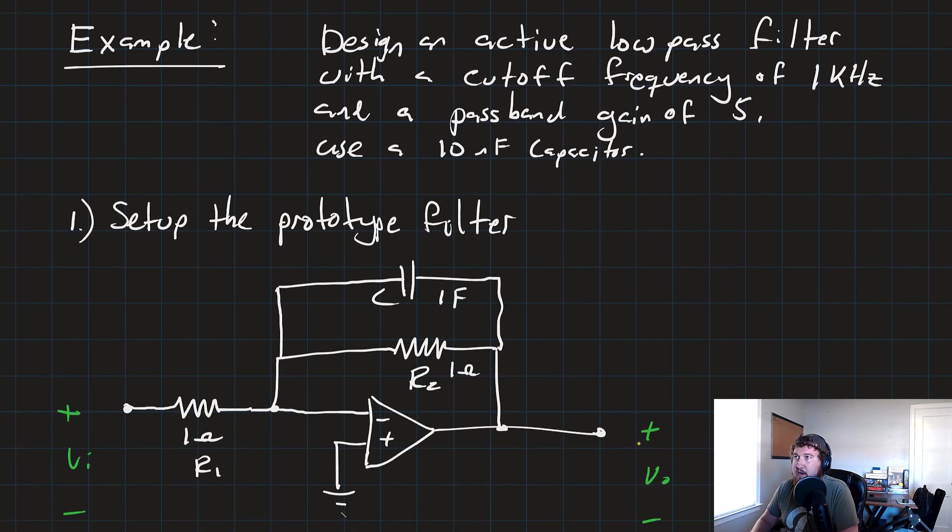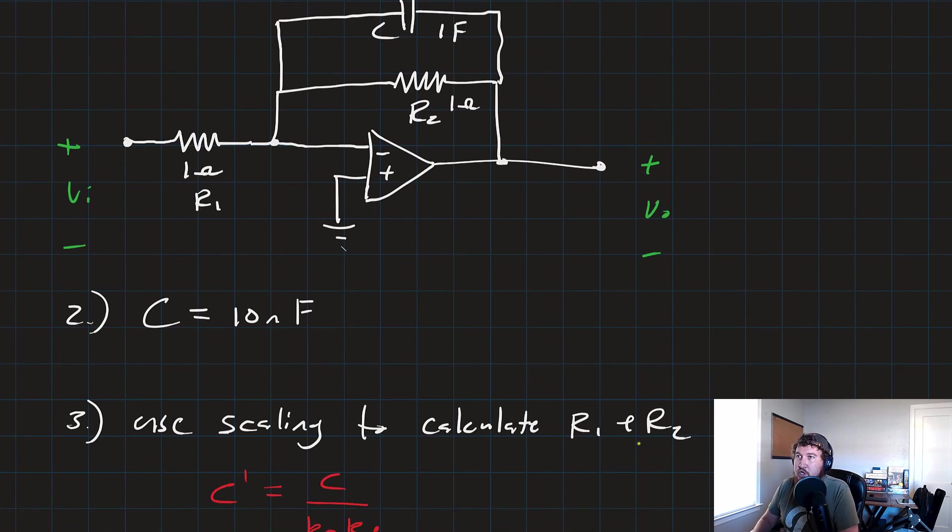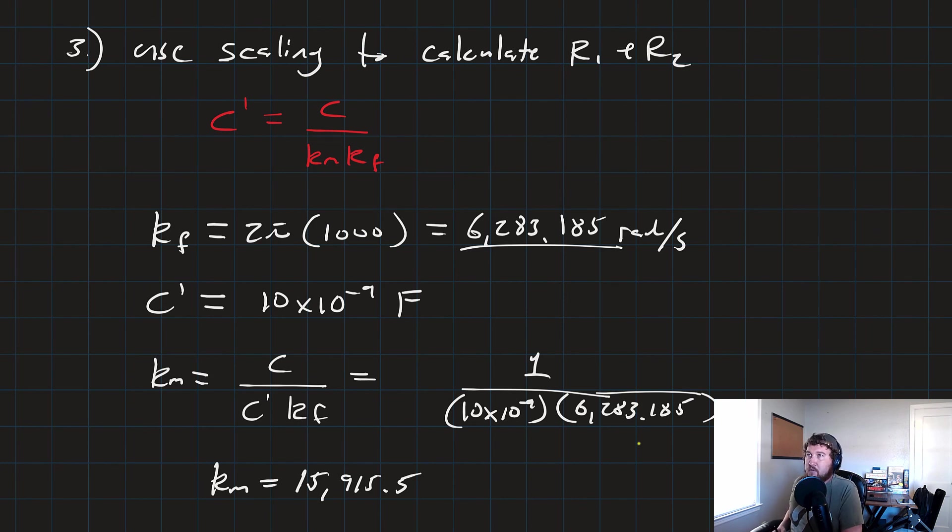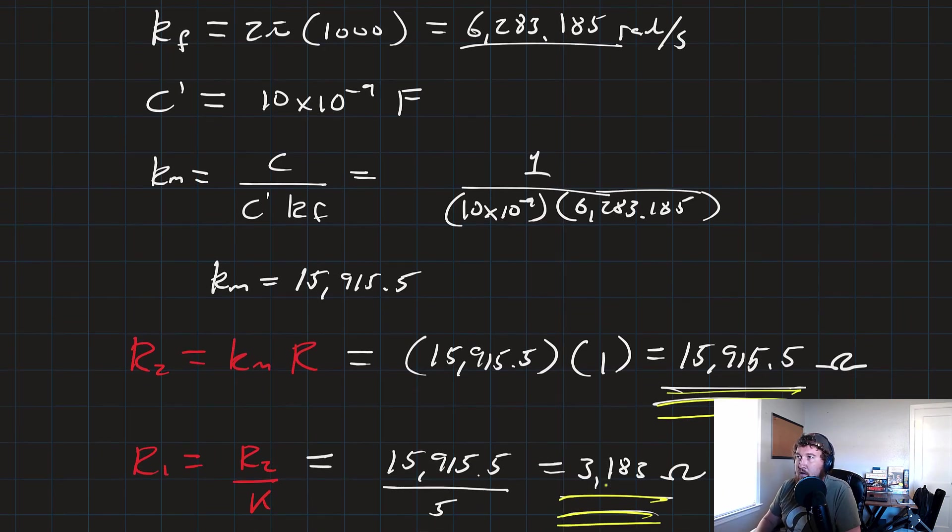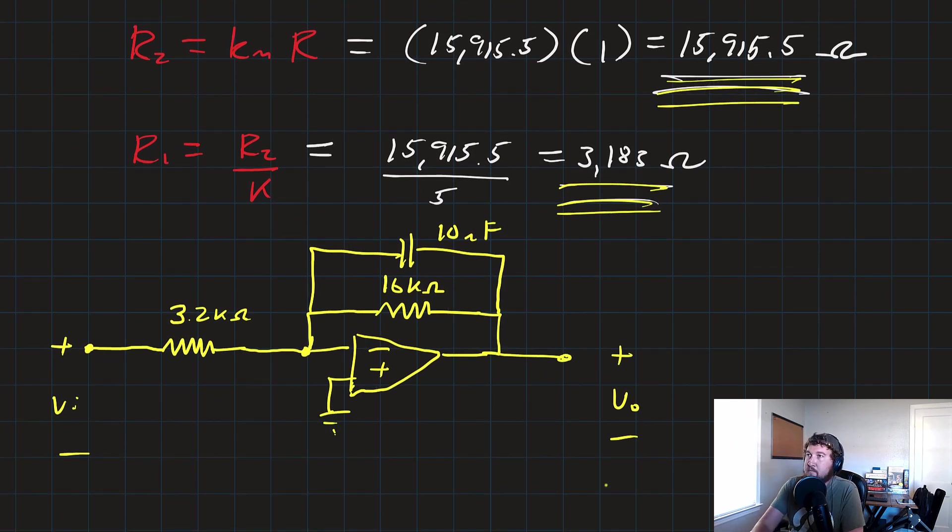So just to recap that process, given your spec, the first thing you'll do is you'll set up that prototype filter where basically everything is equal to one, choose the capacitor value, and then use your scaling factors to build up your actual values for your resistors from those scaling constants. So there you go. That's how we design a low-pass filter using scaling techniques.